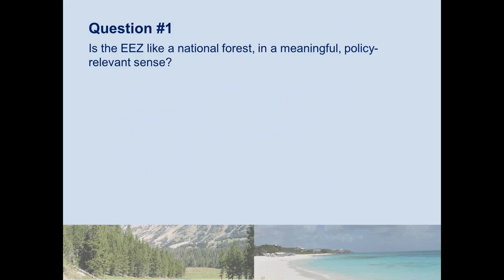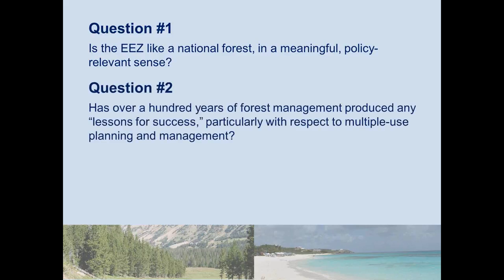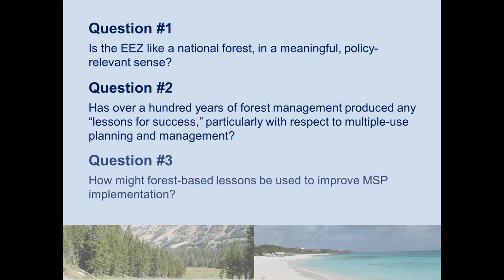Here were my research questions. Number one: Is the EEZ actually like a national forest in some meaningful policy-relevant sense? Of course, anyone can say they're different — one is wet and one is not. But when I ask if they're similar in a policy-relevant sense, that's what I want to explore. Question two: if there are similarities, has the long period of forest management produced any lessons we can learn as we move forward with marine spatial planning? And question three: if they're similar and if there are lessons, how can we apply them to marine spatial planning and ocean management generally?